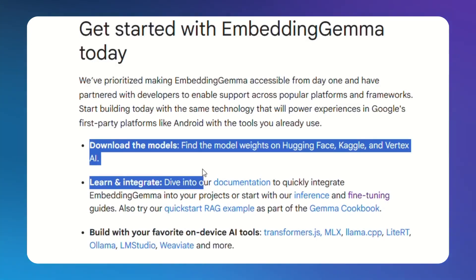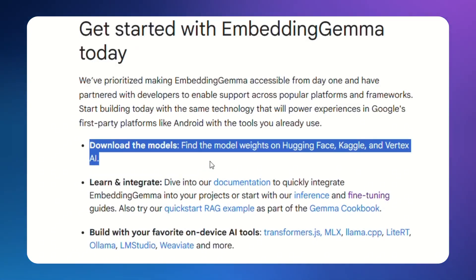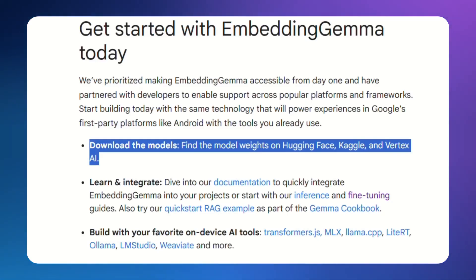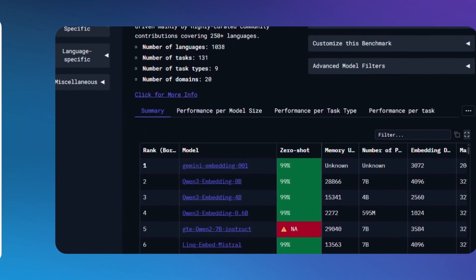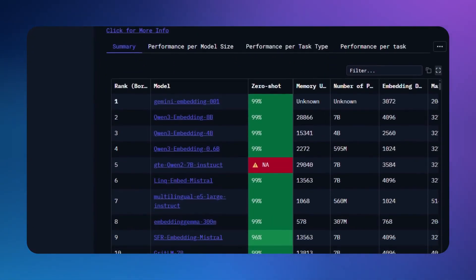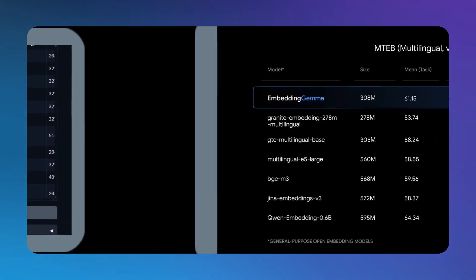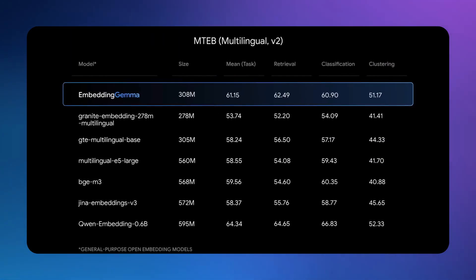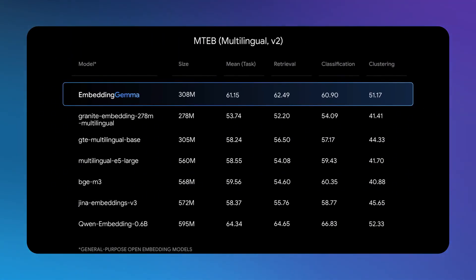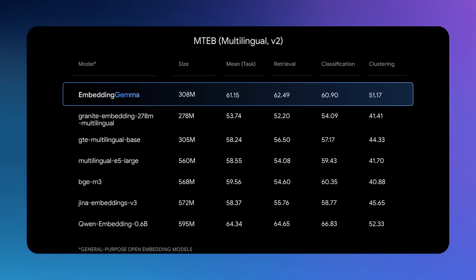Every AI company charges for embeddings. OpenAI charges you. Anthropic charges you. But Embedding Gemma is completely free and open source — download it right now. This thing scored the highest on the Massive Text Embedding Benchmark, the gold standard for testing embedding models. It beat every other open source model under 500 million parameters. We're talking about performance that usually costs thousands of dollars per month.